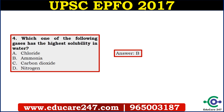The fourth question is: which one of the following gases has the highest solubility in water? This is also a very factual question — you need to remember the solubility table, which gas comes first and which comes last. Here the answer is ammonia; out of the given four gases, ammonia is the most soluble in water.